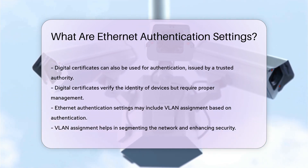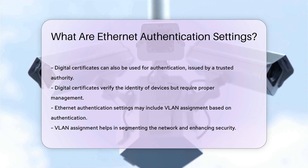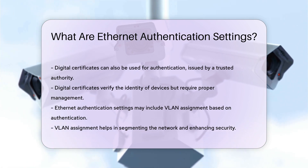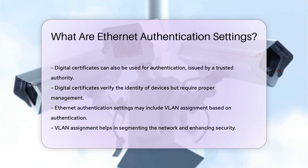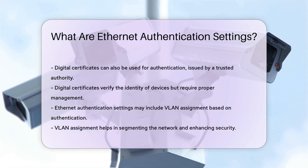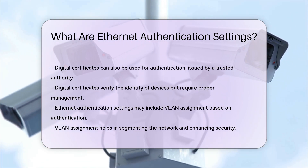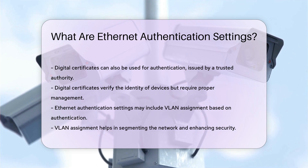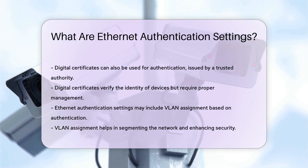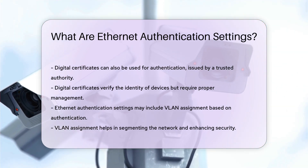Ethernet authentication settings can also include VLAN assignment. Based on authentication results, devices can be assigned to specific VLANs, which helps in segmenting the network and enhancing security.